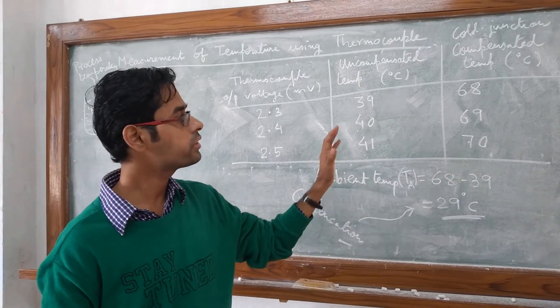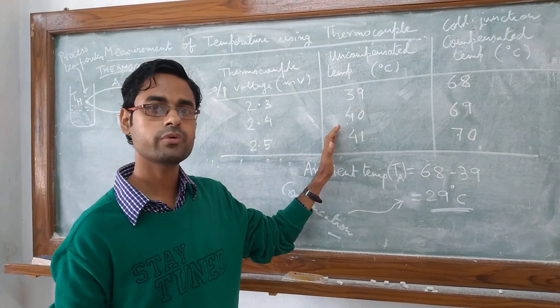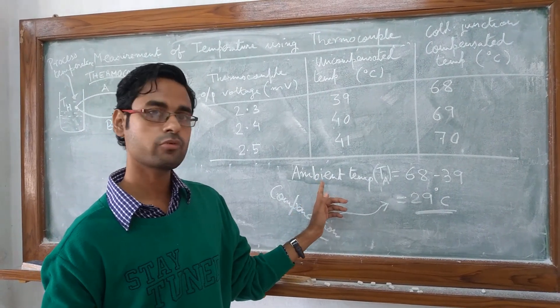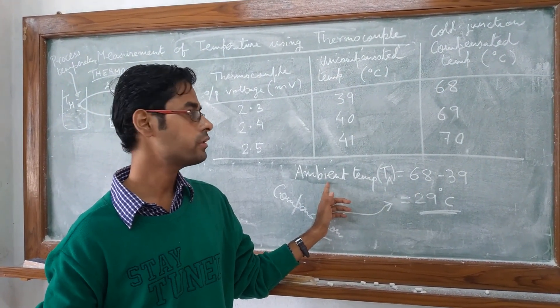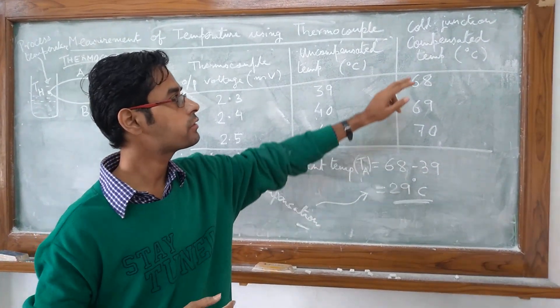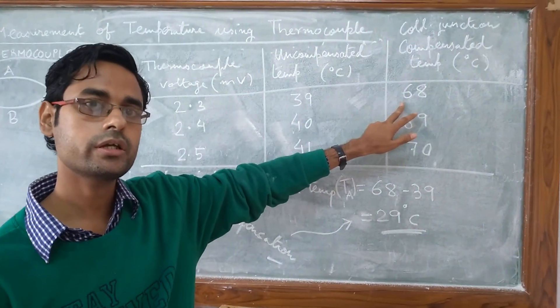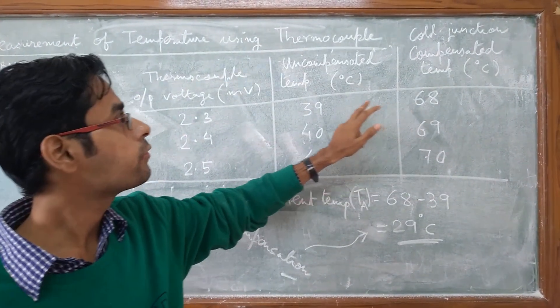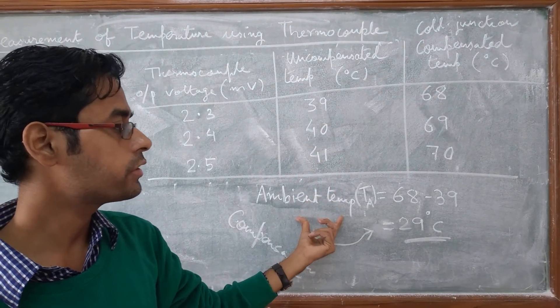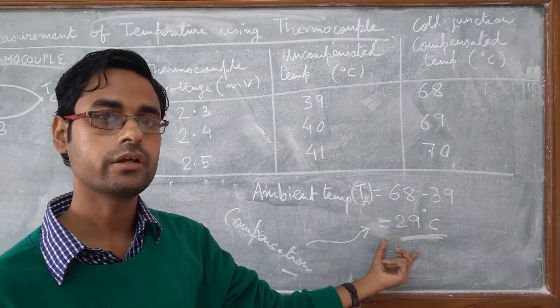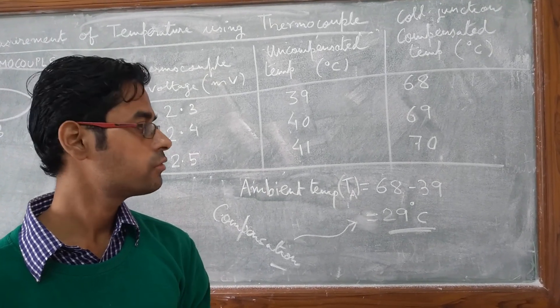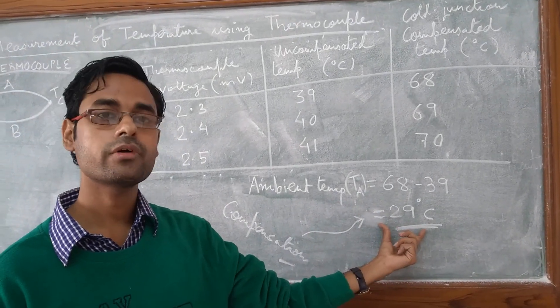So these were the set of readings that were obtained previously. And you can see that the compensation was provided for ambient temperature by the cold junction compensation circuit, where we found that the compensated temperature was 68 degree centigrade while the uncompensated temperature was 39 degree centigrade. So the ambient temperature was 29 degree centigrade. So the electronics module was providing for compensation for this value of ambient temperature.